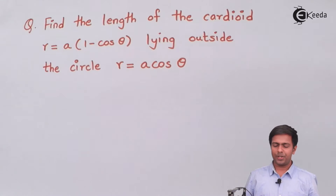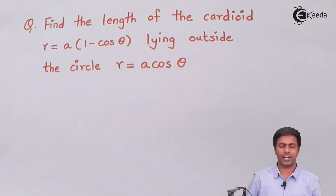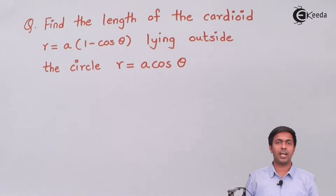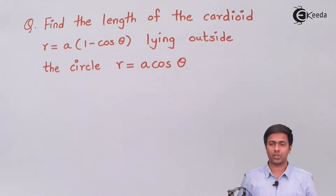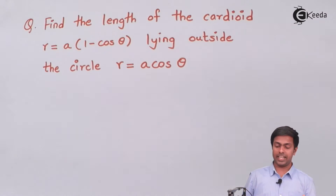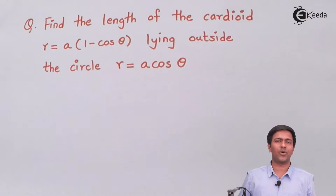We have to find out the length of the cardioid which is r equal to a into (1 minus cos theta) lying outside the circle r equal to a cos theta.